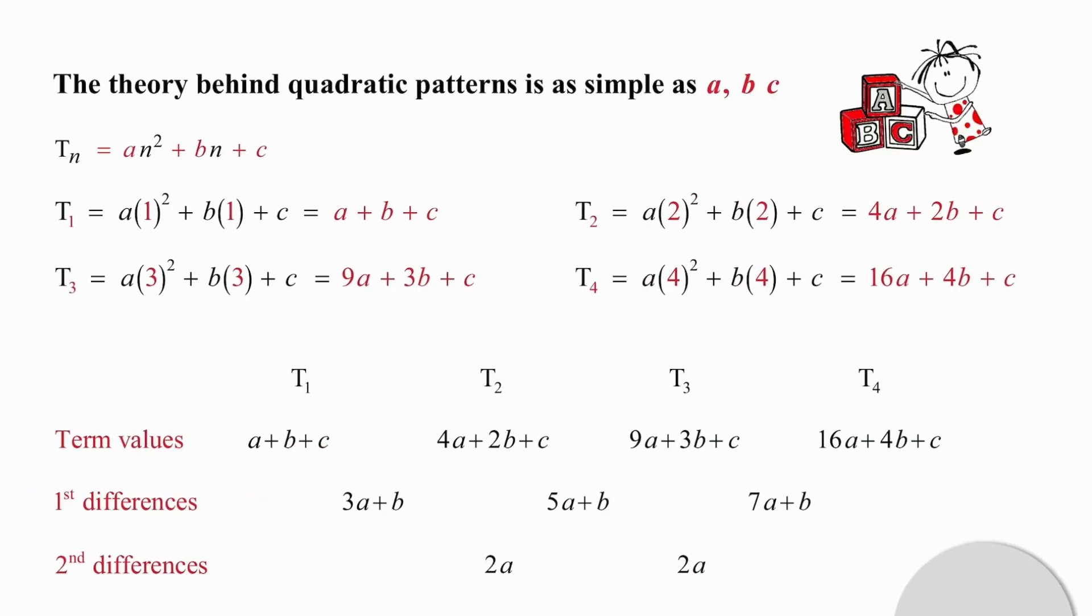The theory behind quadratic patterns is as simple as abc. If we take the formula for a quadratic pattern and we substitute 1, we end up with a plus b plus c as the value of the first term. Taking the same formula, this time substituting 2, we end up with 4a plus 2b plus c, the value of the second term. Substituting 3 for n gives us 9a plus 3b plus c, the value of the third term. And finally, substituting 4 gives us 16a plus 4b plus c, the value of the fourth term.